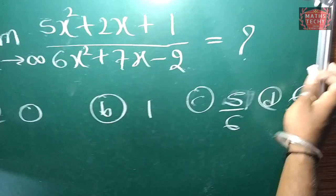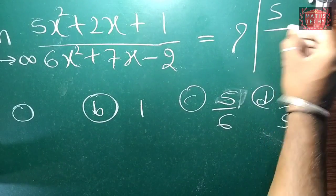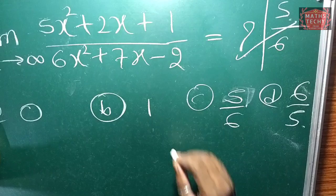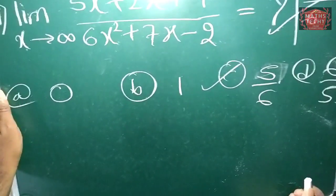What is the x² coefficient here? Five. So what is the x² coefficient in the denominator? Six. So the answer is 5/6, and that is option C, correct.